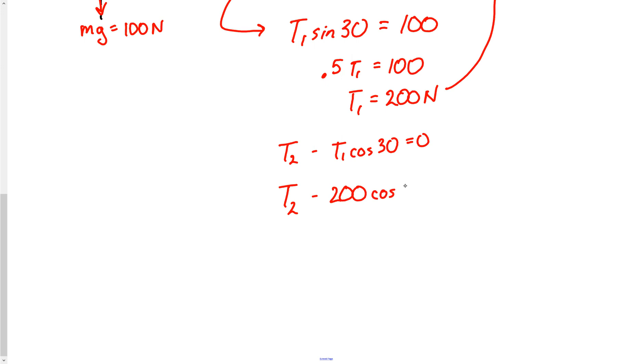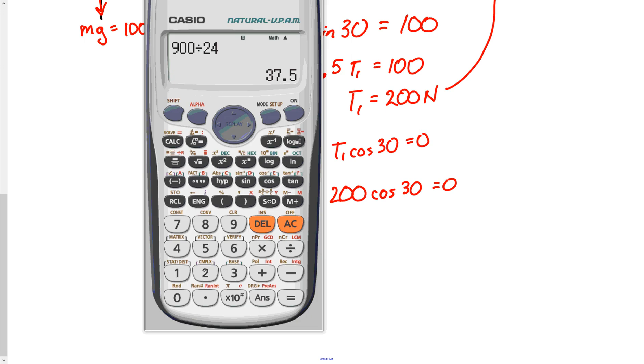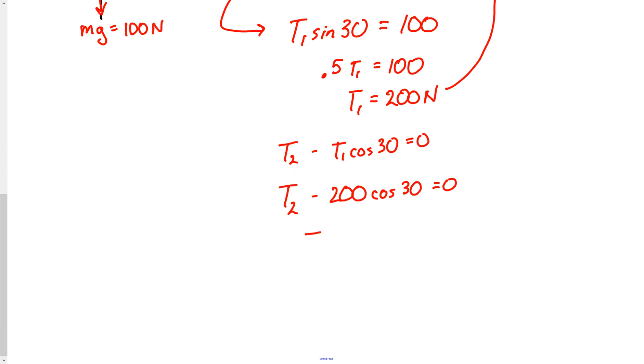Again, I'm intentionally leaving my units out so they don't muddy this up. So 200 cosine of 30, which is 0.8667. But we'll use the Casio calculator. 200 cosine of 30. And we get a digit answer for that. So T2 minus 173 equals 0. Or we could say that T2 is equal to 173 newtons. And there is our solution on that one.